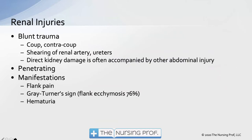Regarding renal injuries — the kidneys are solid organs, so blunt trauma causes more injury than penetrating trauma. Blunt trauma can split the kidney open, potentially requiring removal. The kidney is very vascular so penetrating trauma still causes significant bleeding. Key signs to know for the exam: Grey Turner's sign is ecchymosis in the flank area, present in about 76% of renal injuries. Cullen's sign is bruising around the umbilicus.